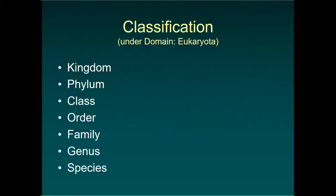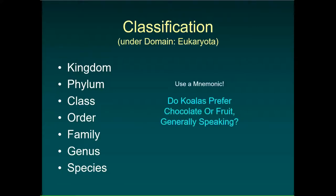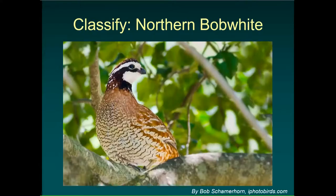Whenever we're talking about wildlife or organisms in general, we need to talk about Carl Linnaeus's ranking system — basically a system of nomenclature. In 1735, he gave us this system of organizing organisms into different taxonomic groups: kingdom, phylum, class, order, family, genus, and species. This goes from very broad to very specific. An easy way to remember that is a mnemonic device: 'Do Quails Prefer Food Or Fruit?'